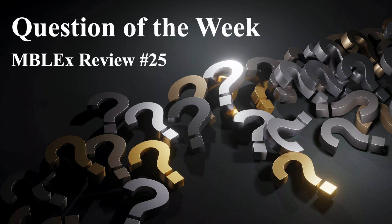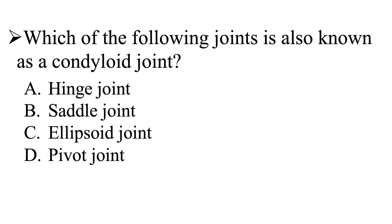Question of the week, Inplex review number 25. Our question is: which of the following joints is also known as a condyloid joint? Is it going to be A, hinge joint; B, saddle joint; C, ellipsoid joint; or D, pivot joint?